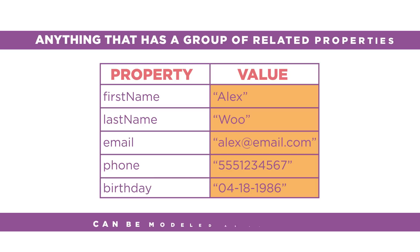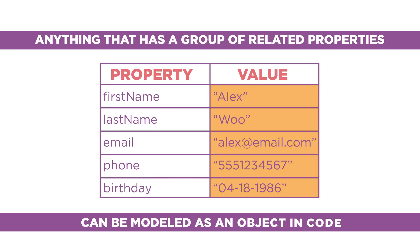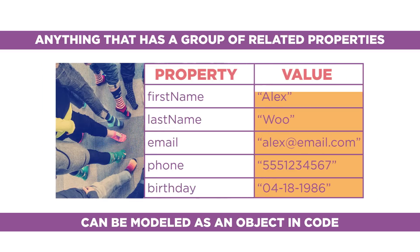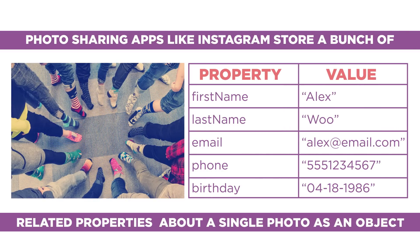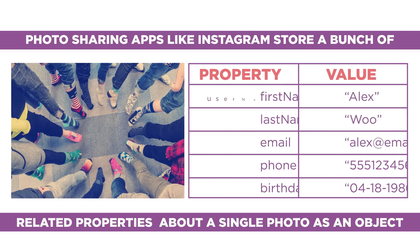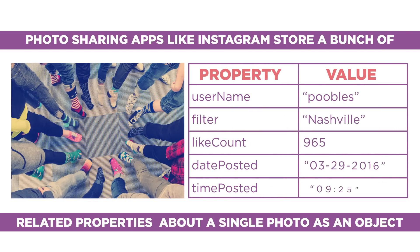Anything that has a group of related properties can be modeled as an object in code. For example, photo sharing apps like Instagram store a bunch of related properties about a single photo as an object. Let's create a single photo object that just stores values for these properties.